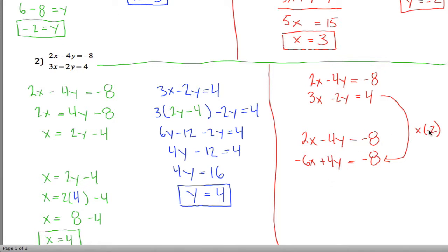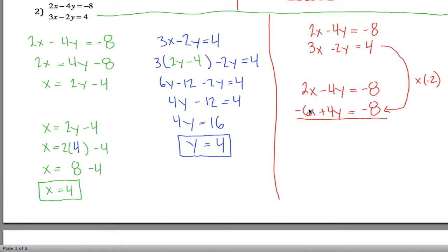By choosing that negative 2 carefully, I've set things up so that when I add these two equations together, the y's will go away. 2x plus negative 6x is negative 4x. Negative 4y plus 4y is nothing. Careful here — negative 8 plus negative 8 is not 0; negative 8 minus 8 more is negative 16. So dividing both sides by negative 4, I get x equals 4.